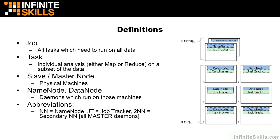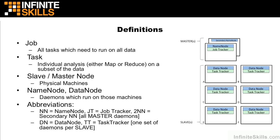These are all the master daemons you see in the upper part of that diagram. DN is the data node, and TT is the task tracker. In a typical Hadoop cluster, you'll have one data node and one task tracker per single individual slave.